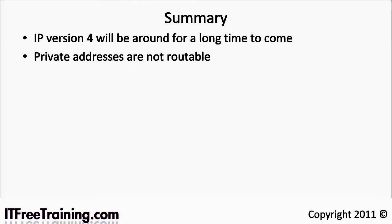Remember, with IP version 4, even though it has been around since the seventies, it has been developed and improved since then and will be around for a long time to come. It is costly for a company to change its networking over to IP version 6 and without a driving need, a lot of people will stay on IP version 4. Also, a lot of network equipment still only supports IP version 4, even though support for IP version 6 is growing. If you are planning to use private addresses, remember that they are not routable on the internet. Lastly, when setting up your network, plan for growth — networks can often expand much larger than originally envisioned. IP version 4 is not going away, but will be here for a long time, so it is worth the time to learn.